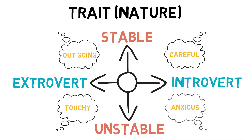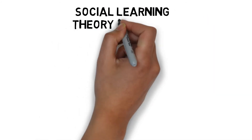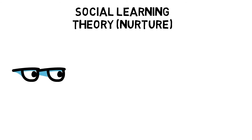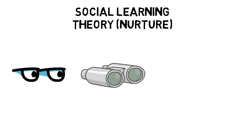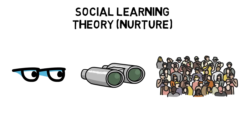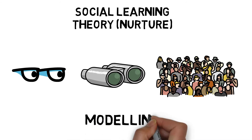Social learning theories explain behavior as being learned through observational learning and by modeling our behavior on what we have seen. Theorists such as Bandura also suggest that behavior is determined by the situation — for example, a calm extrovert may get angry after a bad referee decision.